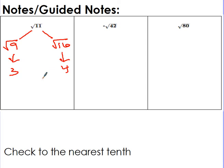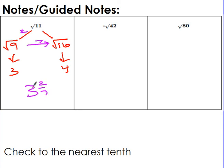To get more accurate, I look at how far away 11 is from the left perfect square. How far is 11 from 9? It is 2 away. The total distance between these two perfect squares — from 9 to 16 — is 7. So three and two-sevenths would be a really good estimate for the square root of 11.